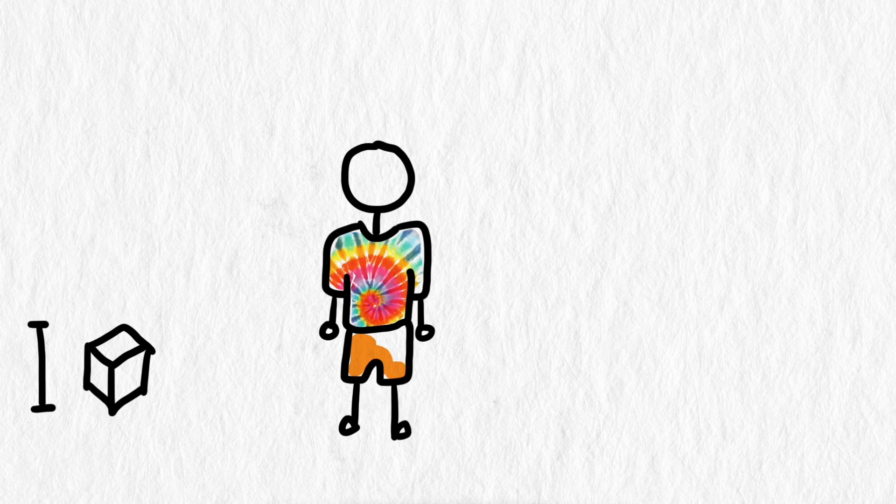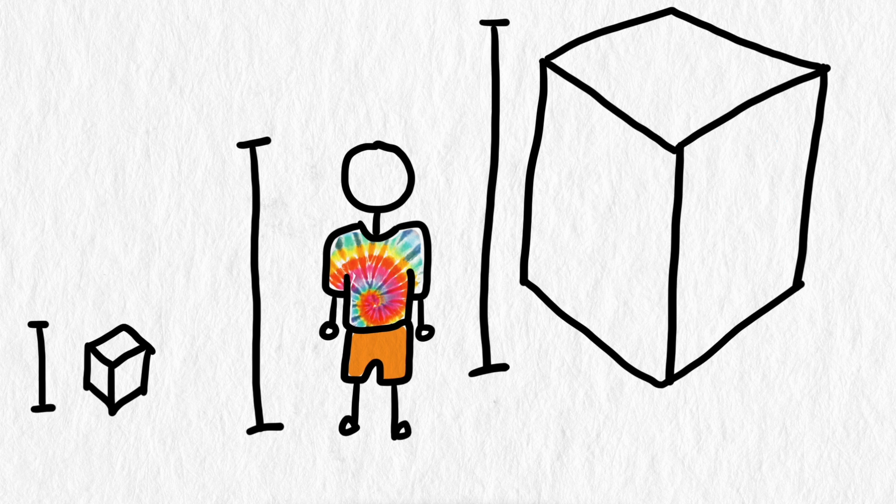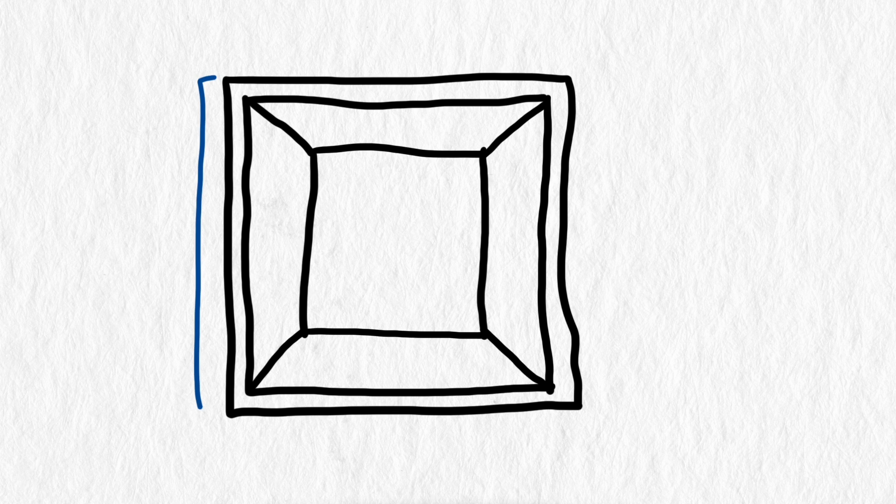First, we need to create a model for the dice. A cube's the most logical shape, but how big? My non-transitivity dice are about 1.8 centimeters on each side. Let's call it 2 centimeters to make things easier.